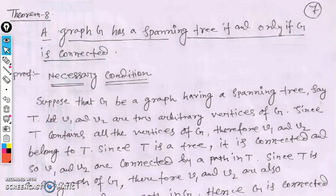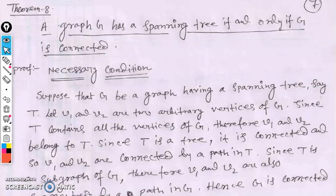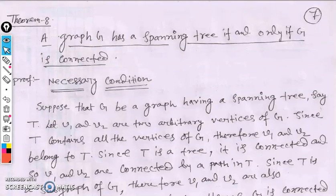Now we move to the last theorem for spanning trees, which is also the last lecture for Module 5. The theorem states: a graph G has a spanning tree if and only if G is connected.